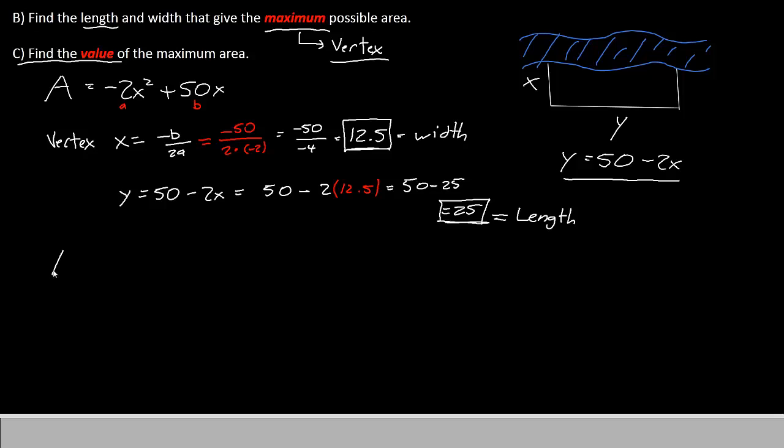So recall that area equals length times width. The length is 25 times the width, which is 12.5. If you multiply these together, you should get 312.5 for our area.